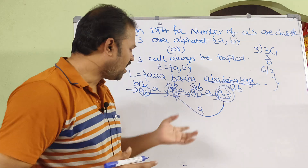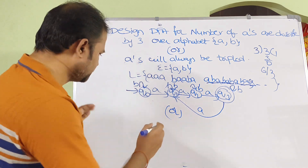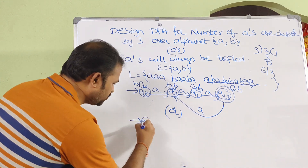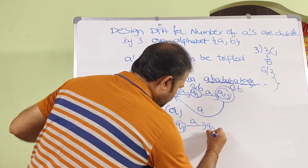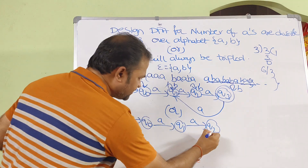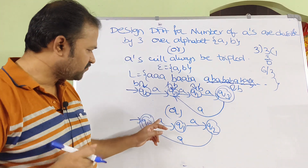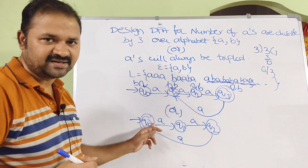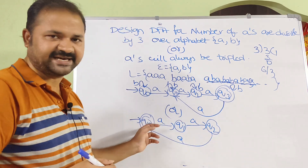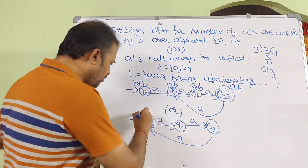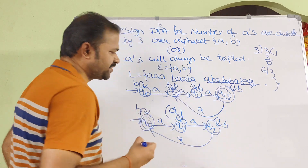We can also draw an alternative DFA using only 3 states instead of 4. Q0 on A goes to Q1, Q1 on A goes to Q2, and Q2 on A goes back to Q0 — let Q0 be the final state. For 3 A's: 1st, 2nd, 3rd A return to Q0, which is the final state. For 6 A's: 4th, 5th, 6th A also return to Q0. We also add self-loops on B at Q0, Q1, and Q2 to allow any number of B's.